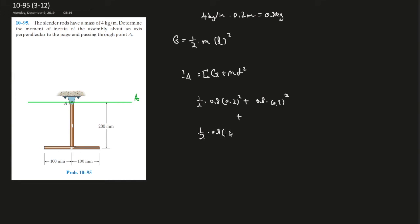The length is also 0.2 to the power of 2, plus the weight is 0.8, and the distance of the centroid to the axis is 0.2.